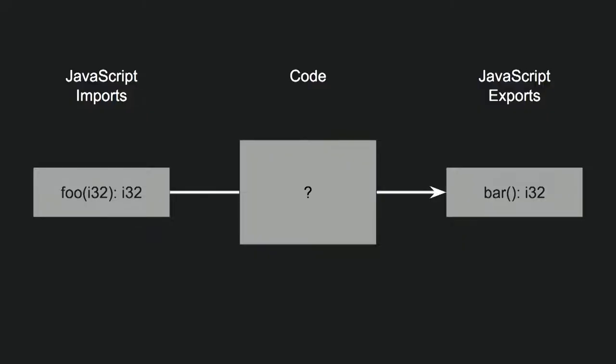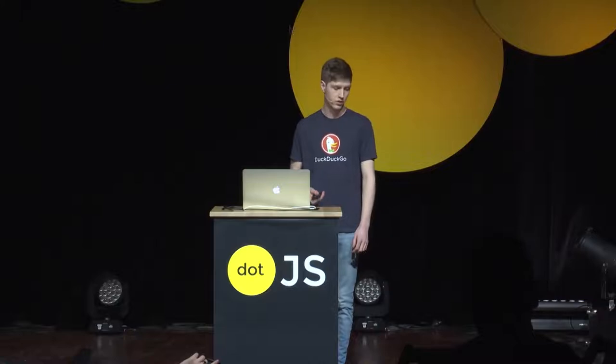You can also see WebAssembly as a black box. If you're familiar with JavaScript modules, on the right-hand side you have JavaScript imports that you feed into WebAssembly. Then you have some code running — it's Rust, C++, whatever. You don't want to look into it; it's compiled code. And then you get JavaScript exports back. In my example, I'm importing a foo function which takes an int and returns an int, and the WebAssembly module will export a bar function that I can call in JavaScript to get an int back.